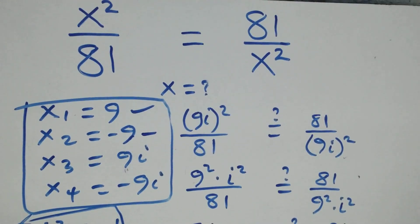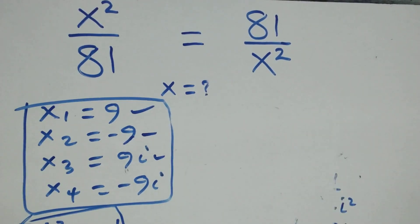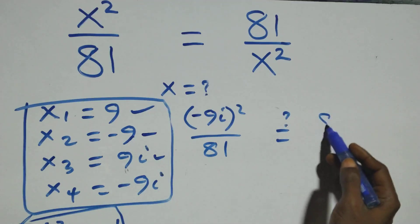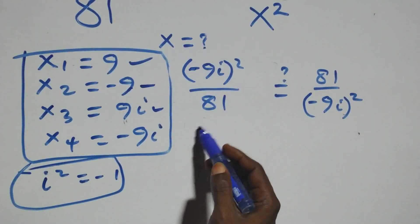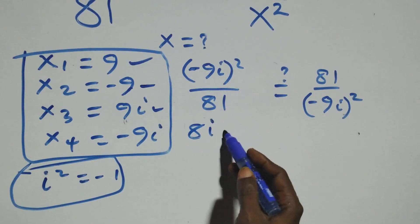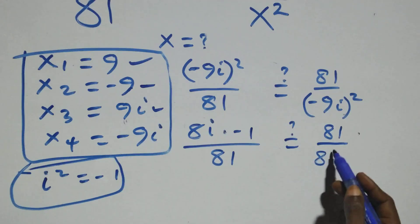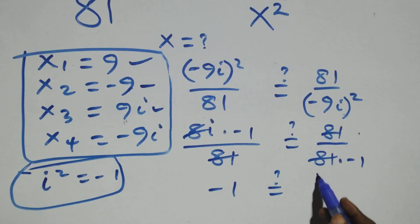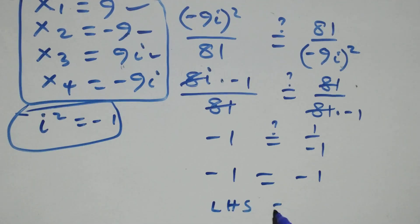For x = −9i: (−9i)² over 81 — the minus squared becomes plus, 9² = 81, i² = −1 — gives −1. The right-hand side is 81 over (−9i)² = 81 over (81 × −1) = 1 over −1 = −1. Left-hand side equals right-hand side, so −9i also satisfies the given problem.